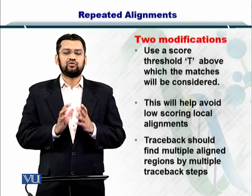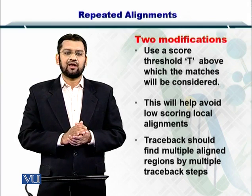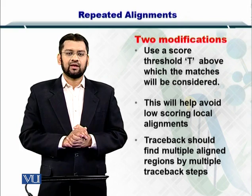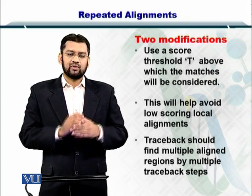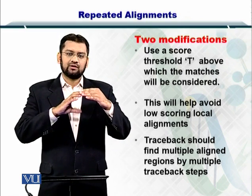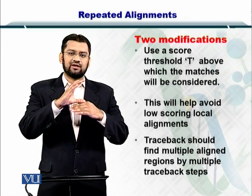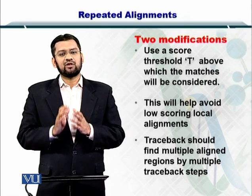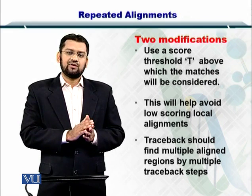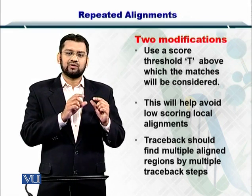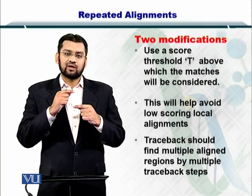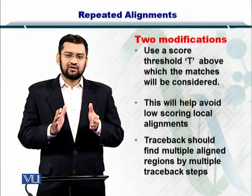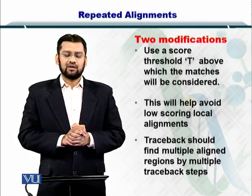To do that, we need two steps. The first one is to modify the recurrence strategy that we used in the local and the global alignments. We will introduce a threshold T that will classify all the scores below T as invalid, but anything above T will be considered as a repeated occurrence. Secondly, we want to modify the traceback strategy, because in our previous traceback strategies we are only finding one sequence in another, but not looking for it again. So we need to somehow restart the traceback while doing the overall matrix traceback.